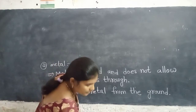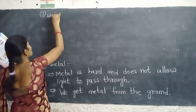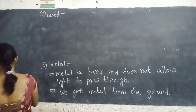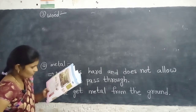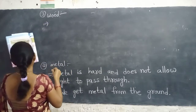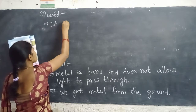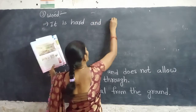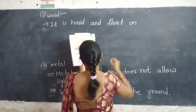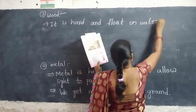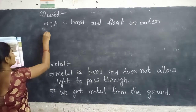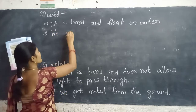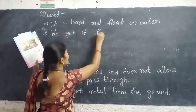Next one is wood. It is hard and floats on water. We get it from trees.